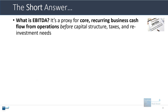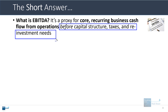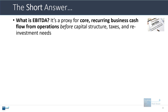The short answer is that EBITDA, or earnings before interest, taxes, depreciation, and amortization, is a proxy for the core recurring business cash flow from operations before capital structure, taxes, and reinvestment needs. By 'before,' what we really mean is that you ignore all of these things when calculating it. So you pretend that the company's debt versus equity doesn't matter, their tax structure and tax rate do not matter, and reinvestment into the business with capital expenditures and working capital also do not matter.